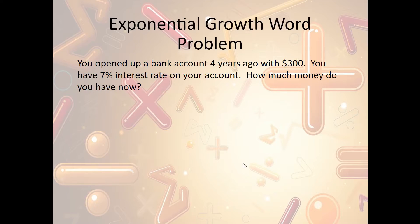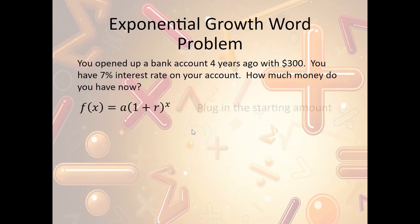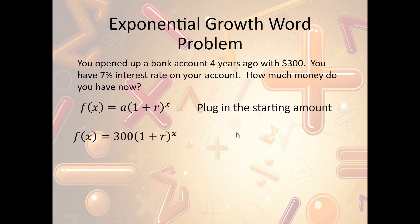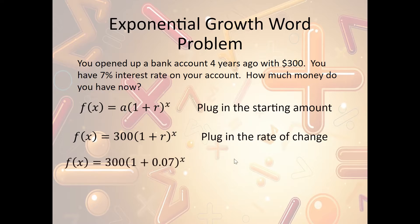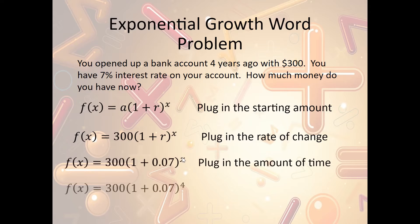Let's look at another example. We opened up a bank account four years ago with $300, with a 7% interest rate. How much money do you have now? We use the exponential growth formula. Starting amount a is $300; rate r is 7%, which as a decimal is 0.07; and time x is 4 years. Using a calculator, we end up with $393.24.